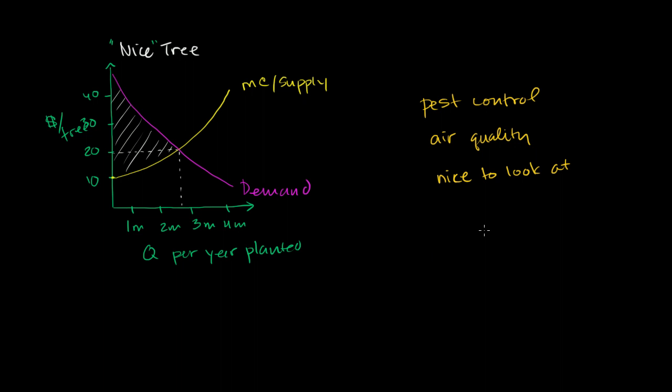And this study that these researchers conduct, they determined that the benefit of all of these things, of the pest control and the air quality and just the aesthetic benefit of society at large, comes out over the life of a tree to $10 a tree. So it is $10 per tree benefit. So they're essentially saying that above and beyond the benefit that the owner of the garden gets, there's a societal, there's an external benefit. And so you can imagine, we're talking about positive externalities. There's an external benefit of planting the tree that amounts to $10 per tree.